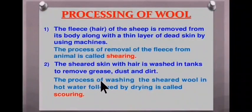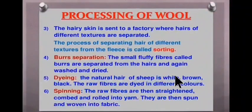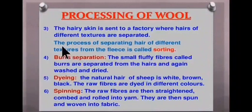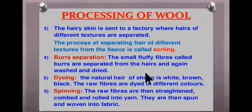The process of washing the sheared wool in hot water followed by drying is called scouring, because the wool obtained contains grease, dust and dirt which need to be removed. Next is sorting — the hairy skin is sent to a factory where hairs of different textures are separated. The process of separating hair of different textures from the fleece is called sorting. Next is burr separation — small fluffy fibers called burrs are separated from the hairs and are again washed and dried.